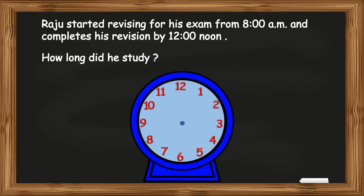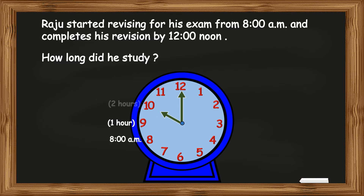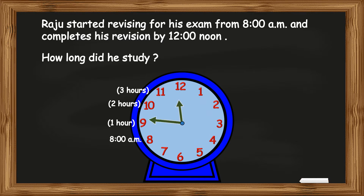We know that Raju started revising from 8 a.m. By 9 a.m. he had finished studying for 1 hour. By 10 a.m. it was 2 hours. By 11 a.m. it was 3 hours. And by the time he completed his revision at 12 noon, he had studied for a duration of 4 hours.